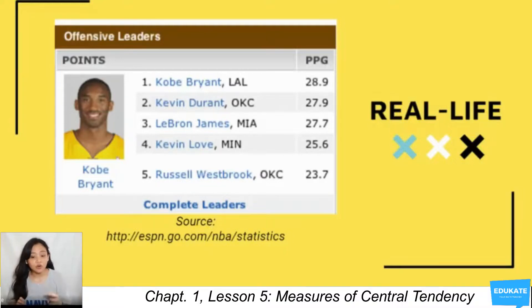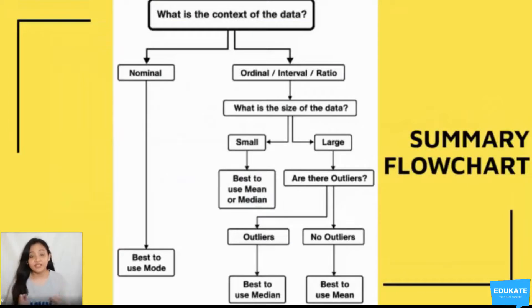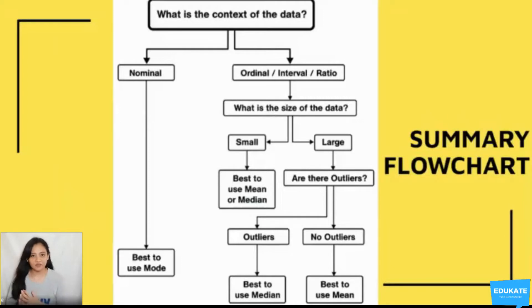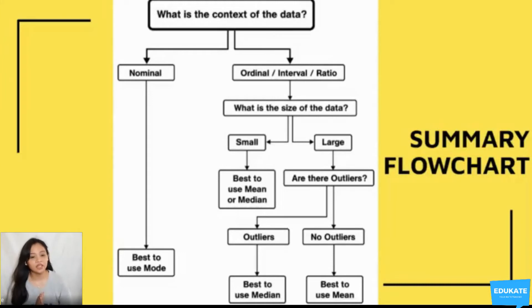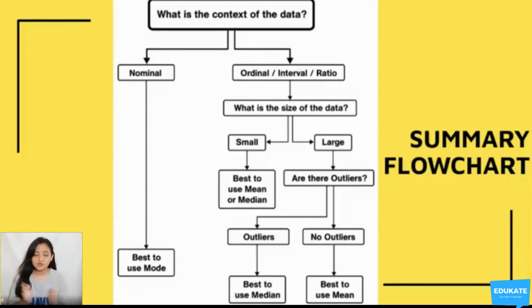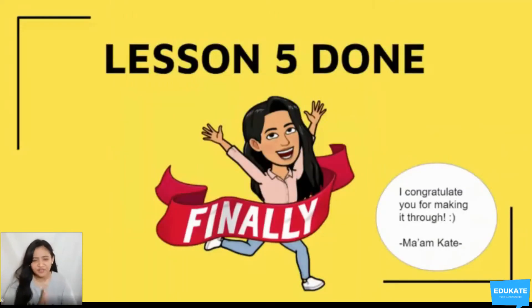Here is a summary flowchart to help determine the best measure of central tendency based on the variable's level of measurement. If you have nominal data, use the mode. For ordinal, interval, or ratio data, determine the size of the dataset: small (less than 30) or large (greater than or equal to 30). For small datasets, use mean or median. For large datasets, check for outliers — if outliers are present, use median; if there are no outliers, use mean.